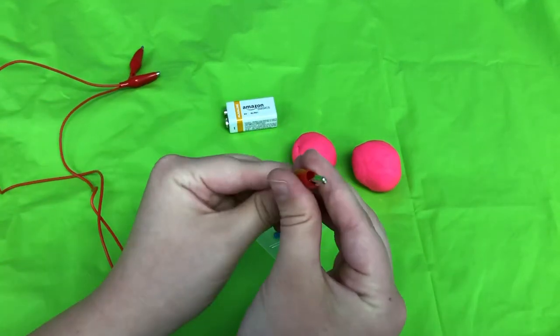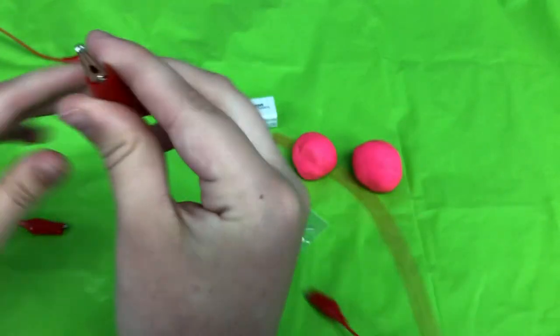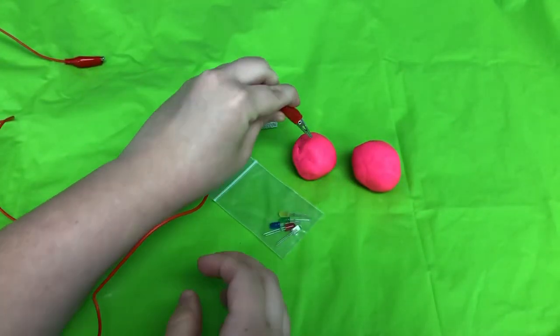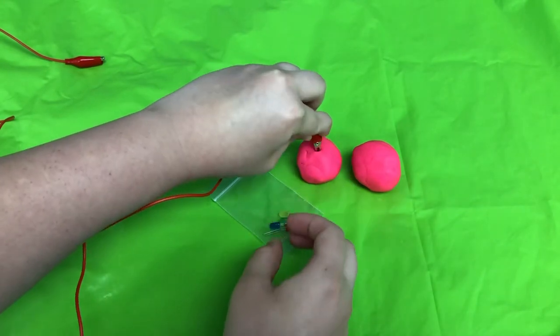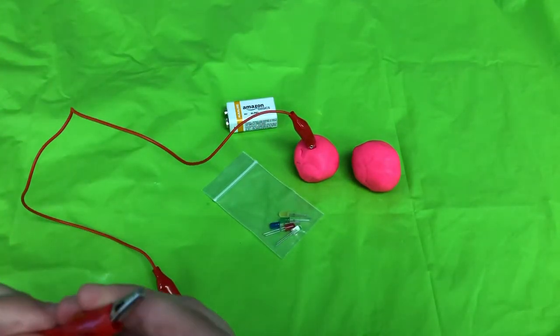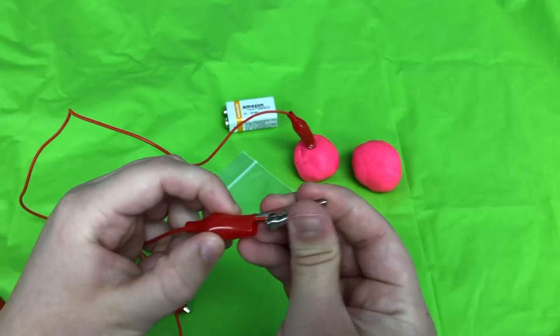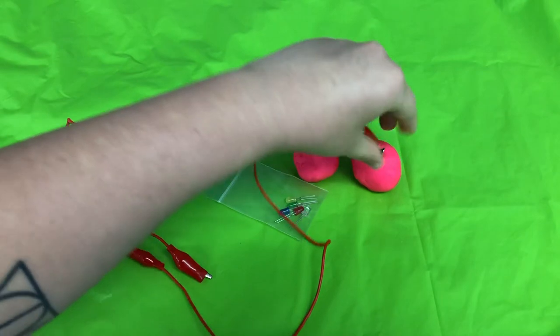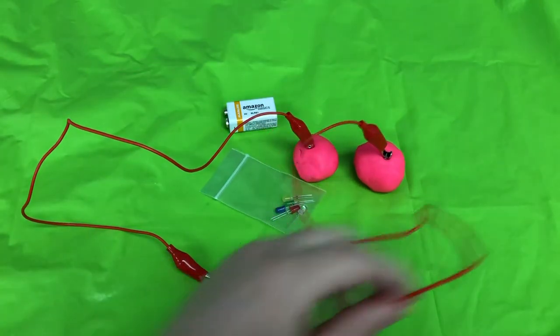Now you will want to take your alligator clips and expose the clip part down at the end and then stick that into your Play-Doh. You'll want one alligator clip per Play-Doh ball. So here is my second one in the Play-Doh. All right, perfect.